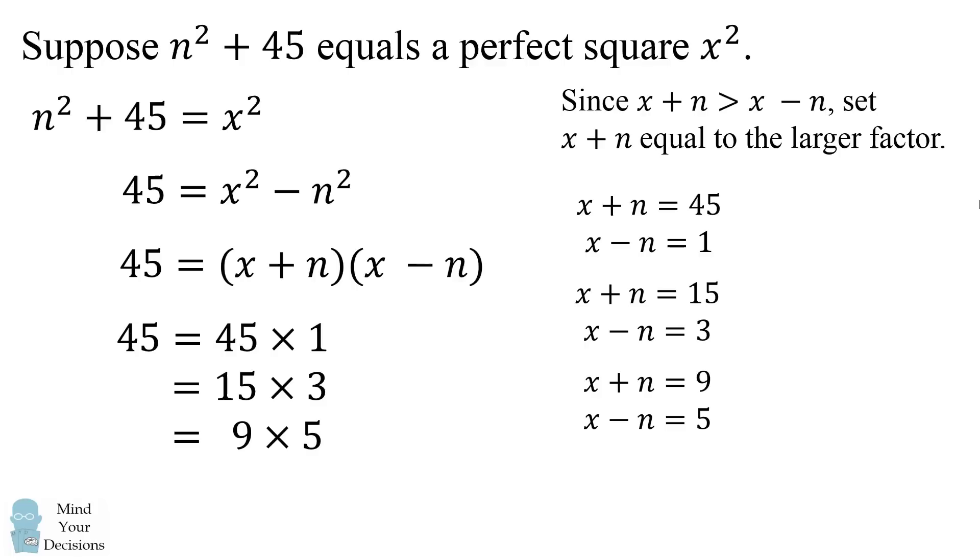We can solve each of these equations for x and n. In the first set of equations, for example, we can add up the two equations to get that 2x is equal to 46. And then we divide by 2 to get x is equal to 23. We can then go back and solve that n is equal to 22.